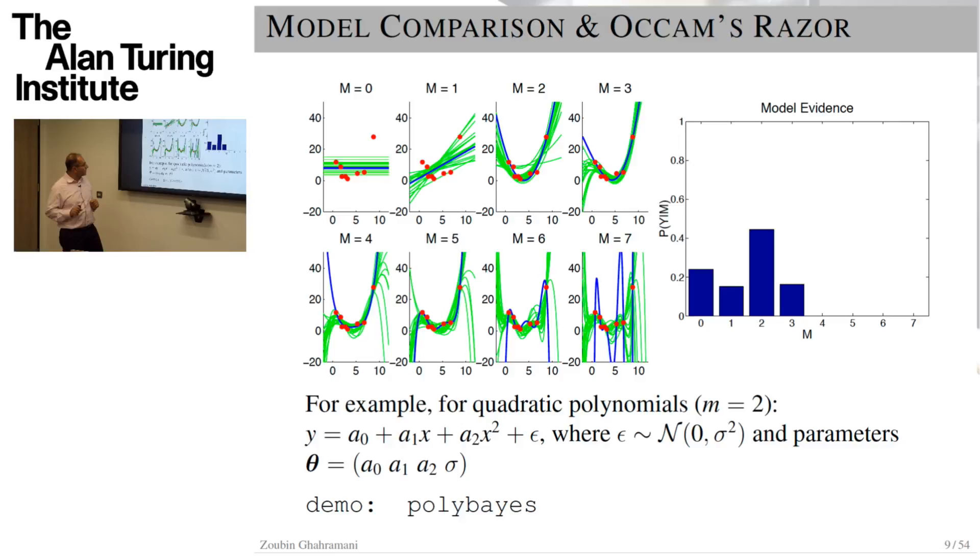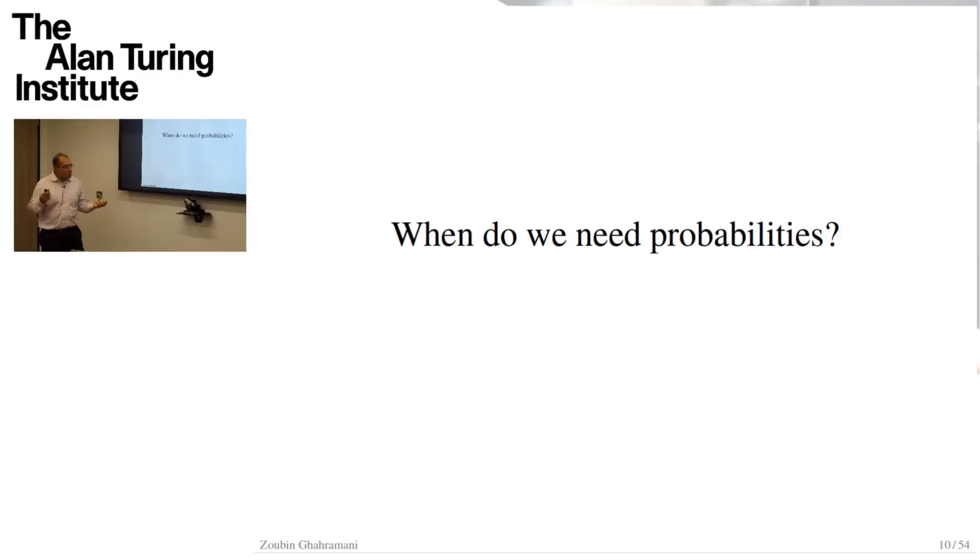This is model comparison in Bayesian Occam's razor applied to the polynomials example. You can see that you can reject models for being too complicated and find sensible answers, like maybe second order is best for this data.